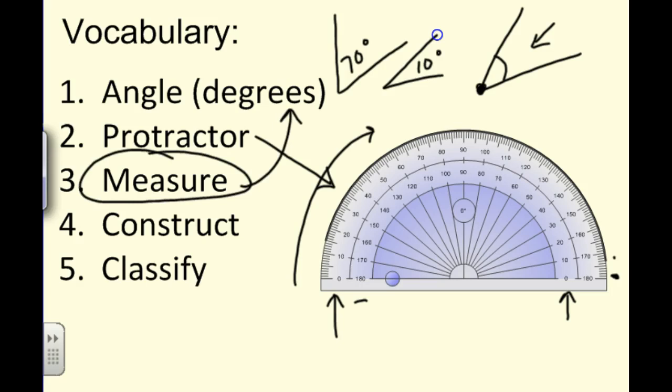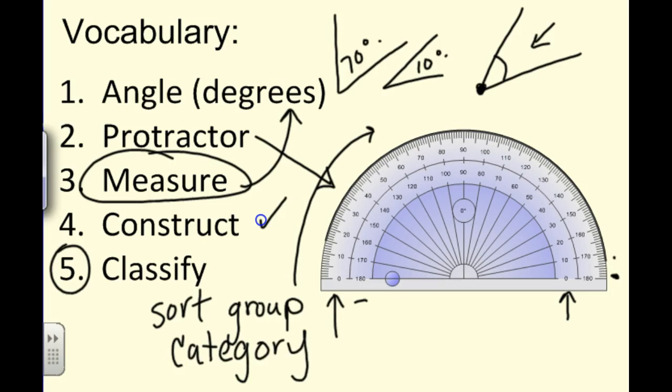So if I ask you to measure an angle, that means tell me how many degrees it is. So find the number, measure it, and tell me how many degrees. Like, I measured this to be 10 degrees, or this one is 70 degrees. If the directions ever say to construct an angle, that means to draw it for yourself. So use a ruler, use a protractor, and construct it, or draw an angle that's a certain type of angle or a certain measurement of an angle. And then the last one, classify. You'll see this word a lot in this chapter. To classify something means kind of to sort it and put it into a group, or tell me what category it goes into. So if I say, like, classify the shape, you'd say, oh, that's a triangle, or, oh, that's a rectangle. So to classify angles, you're going to tell me what type of angle it is. We're going to see classify used lots of different ways in this chapter.